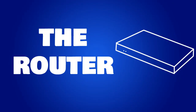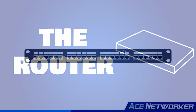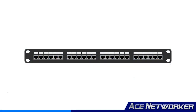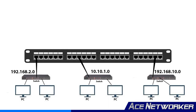Routers are considered layer 3 devices because they examine the packet portion of each data frame and determine at the layer 3 network layer of the OSI model which network or local area network the destination device resides in, and send that data to that network as intended.